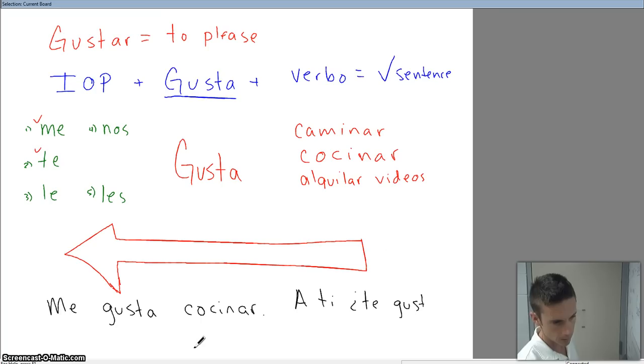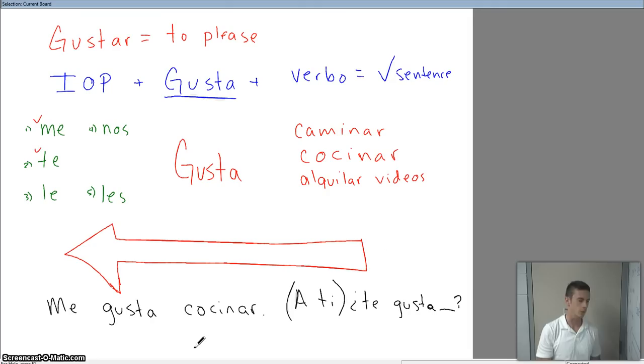A ti te gusta followed by blank—do you like blank, whatever activity I'm going to ask you about? A ti te gusta estudiar, cocinar, caminar—those are examples of how you ask that question. This part is completely optional. You don't have to put it if it's just me and you in a conversation. You can just ask te gusta cocinar.